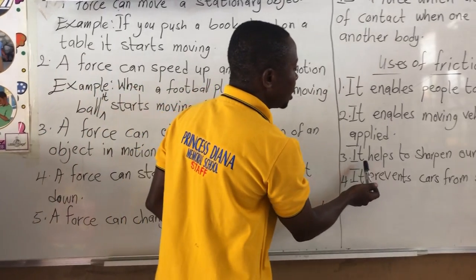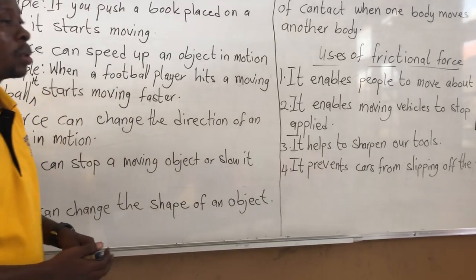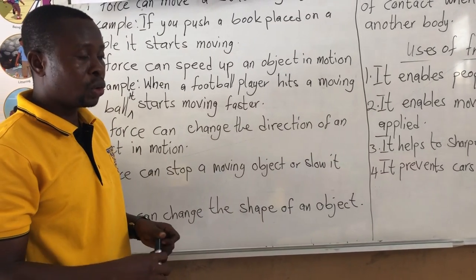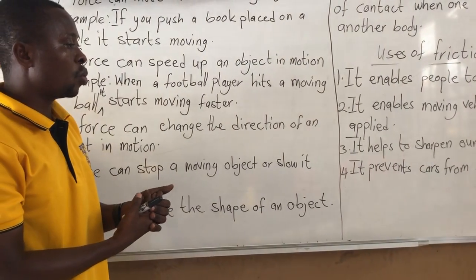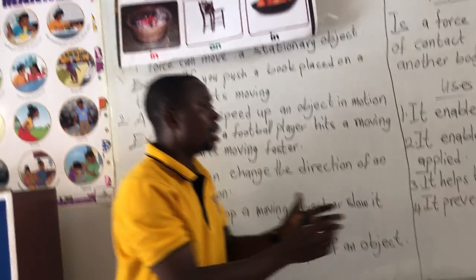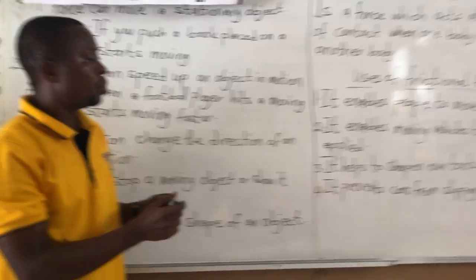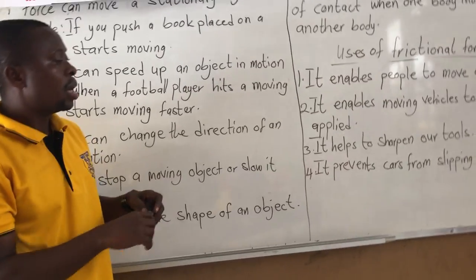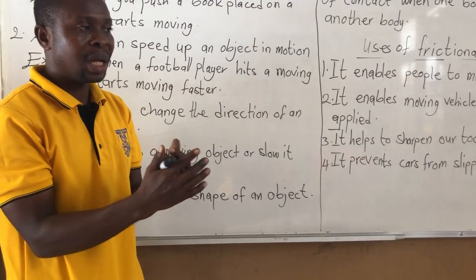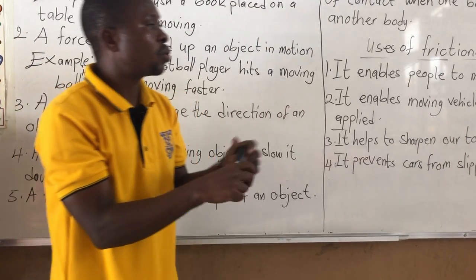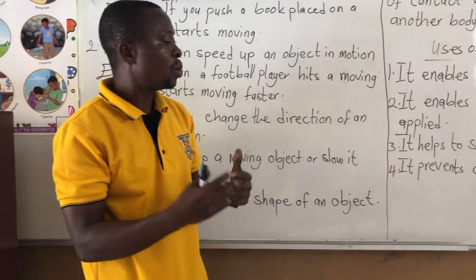Third use: it helps to sharpen our tools. For example, a knife we use at home, the saw, and those tools that we use for cutting — it is friction that helps us to sharpen them. When we send them to be sharpened, it is friction that helps them to become sharp.